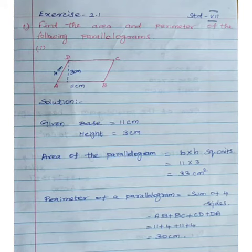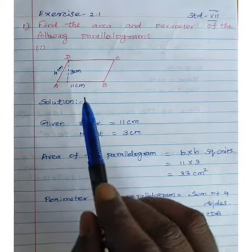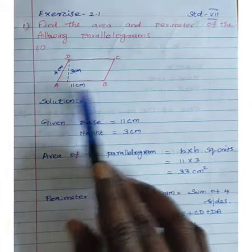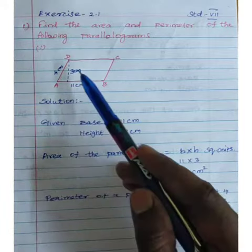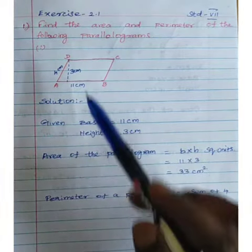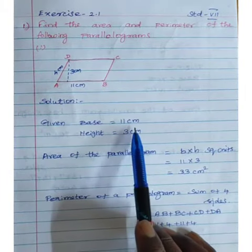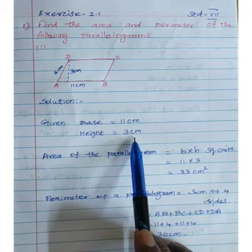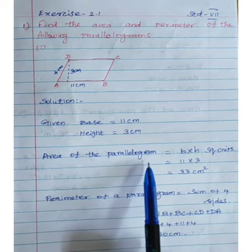The first question is to find the area and perimeter of the following parallelogram. We have a diagram: A, B, C, D is the parallelogram. The base is 11cm, the slant side is 3cm. This is a slant position, and this is the height. So the base is 11cm and the height is 3cm. This is the parallelogram.